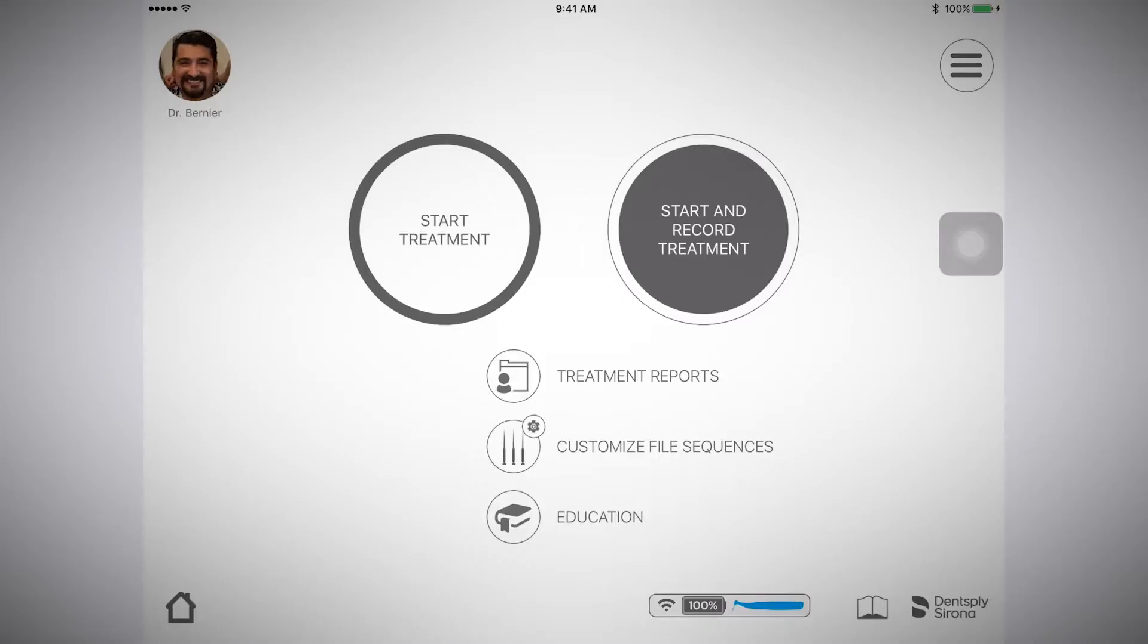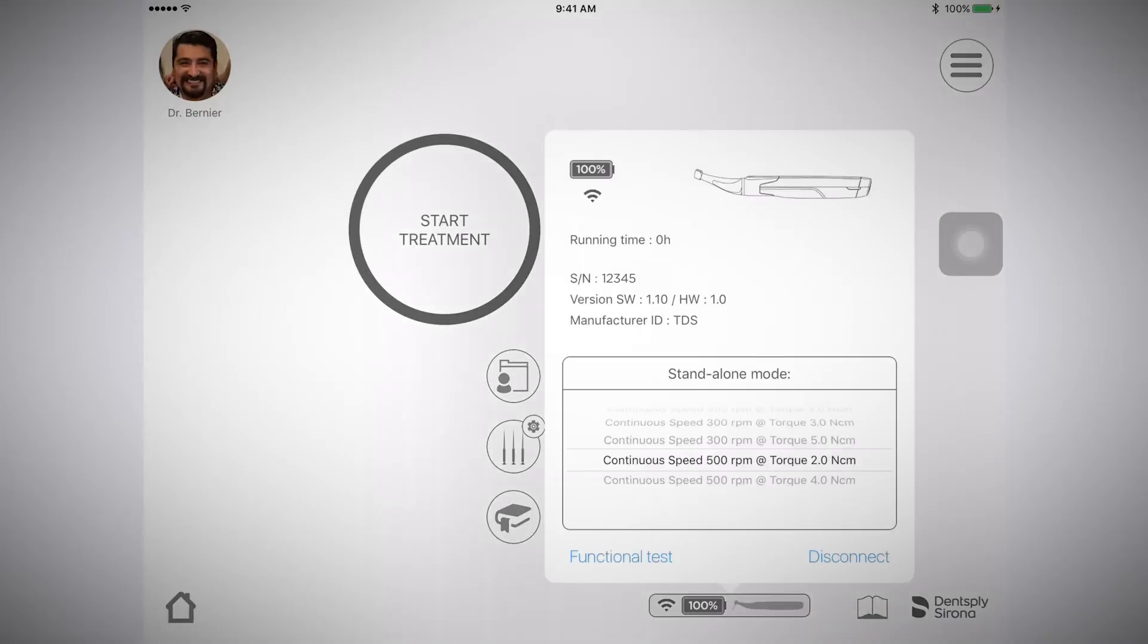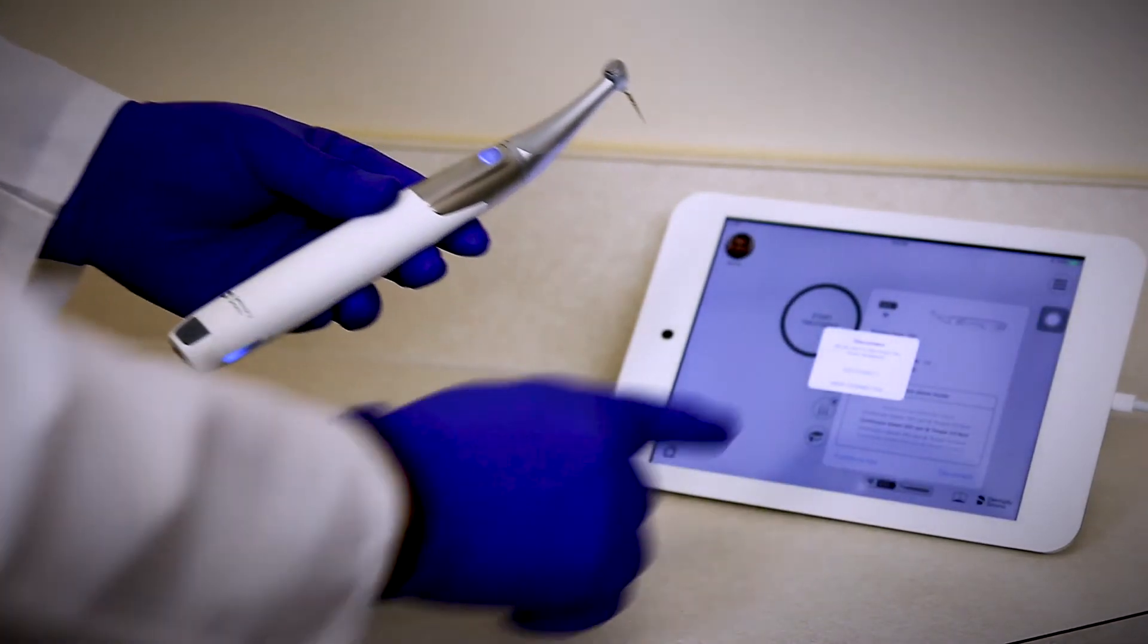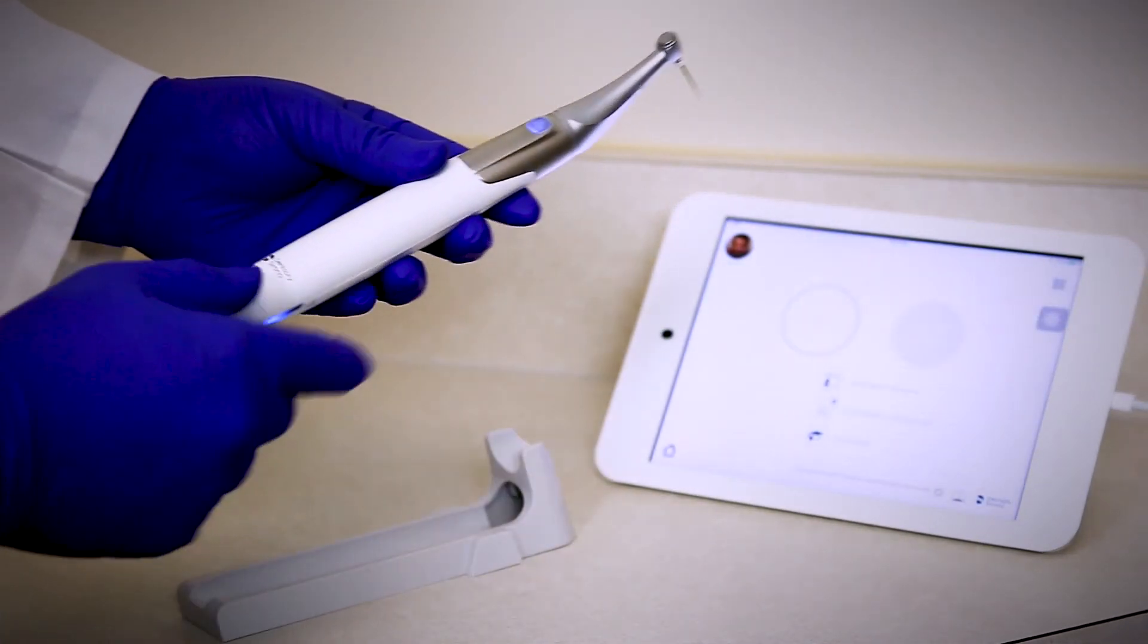Once connected, select the blue handpiece icon within the app. Select a preset speed and torque from the menu of options. Select Disconnect. Then confirm that you would like to disconnect.